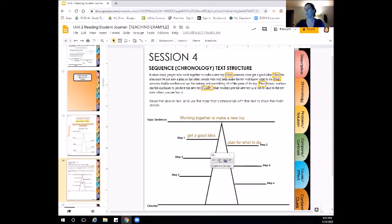So now I'm looking for my third step. And it says here, next, someone builds machines to use for making and assembling all the parts of the toy. So the third part is that they are making the machines. So I'm going to add that into step three.